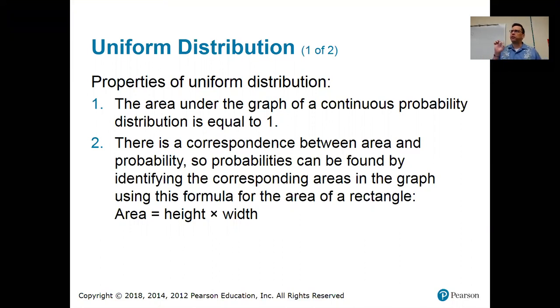So first of all, a continuous probability distribution, that's a distribution where the outcomes can be really any real numbers between here and here. Okay, so like any real number between zero and five. It's the opposite of discrete. Okay, not only can they be whole numbers, but they can be fractions, decimals, whatever. It can take on any number in an interval.